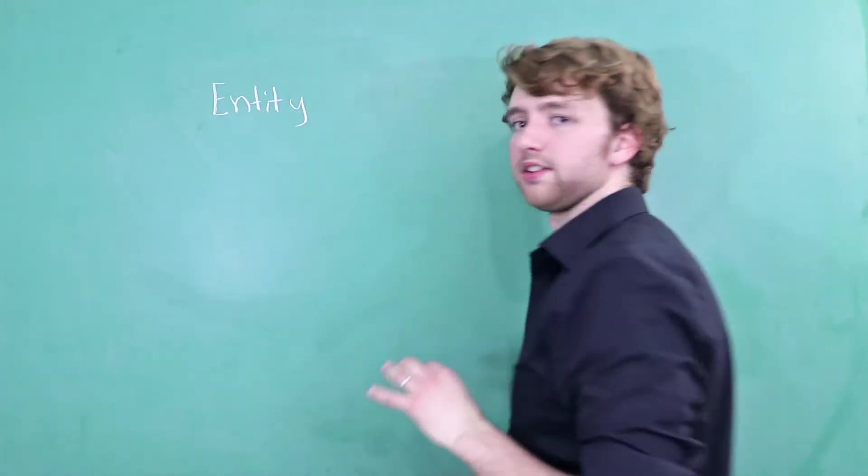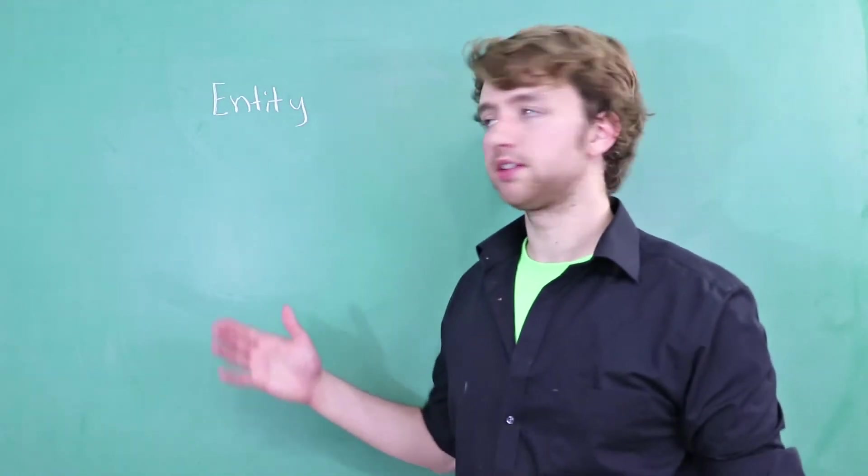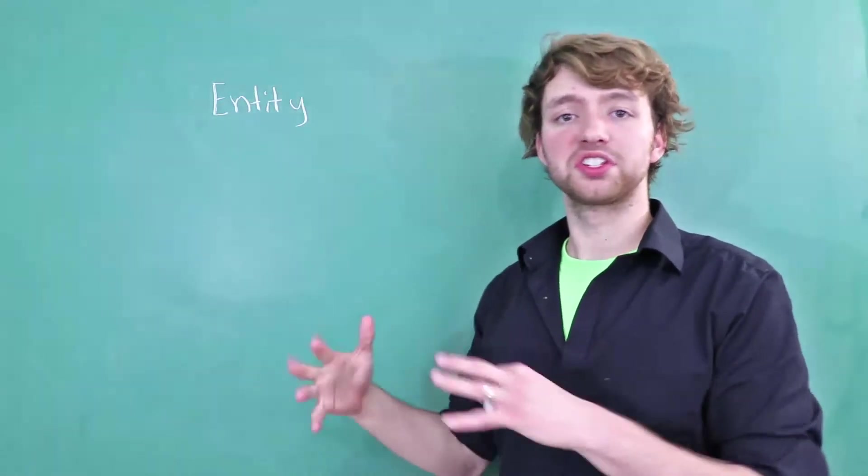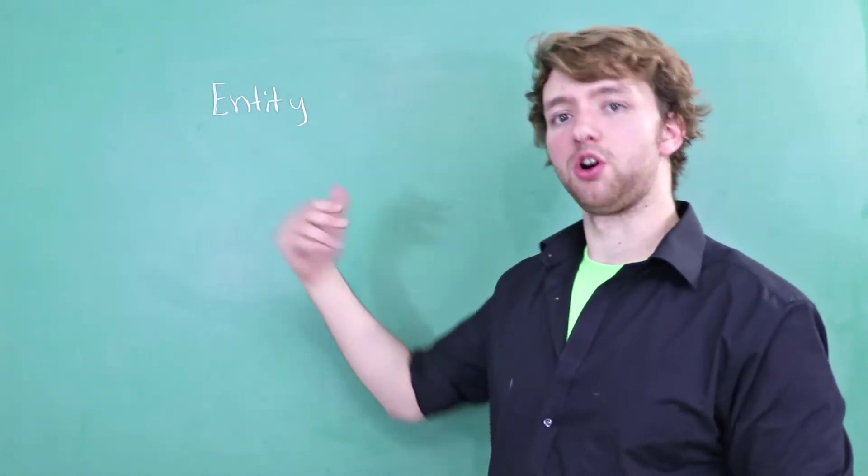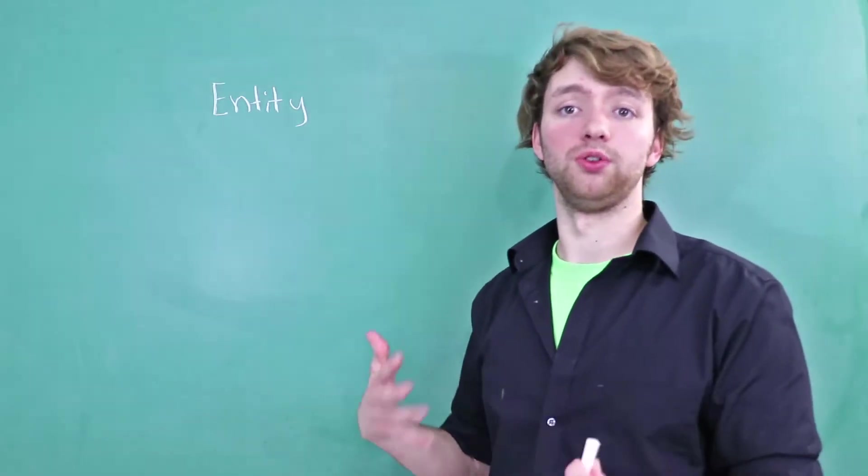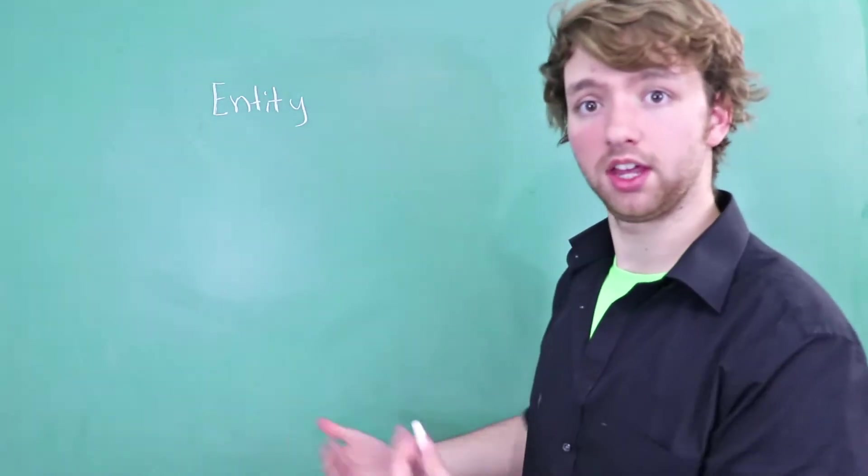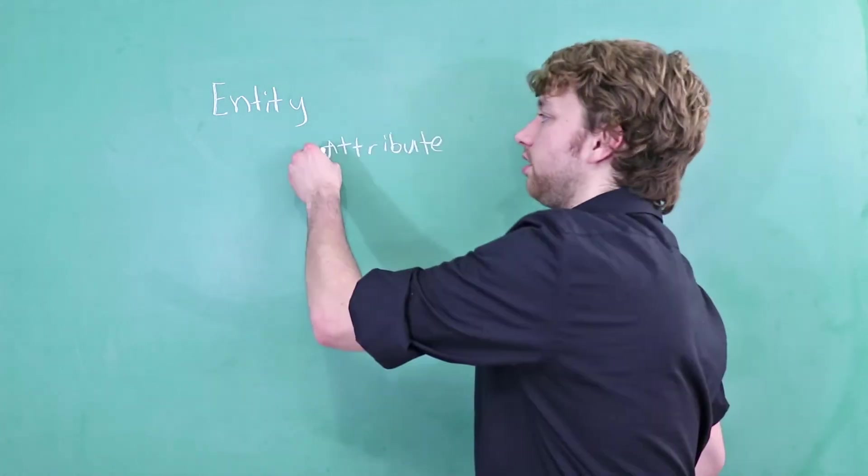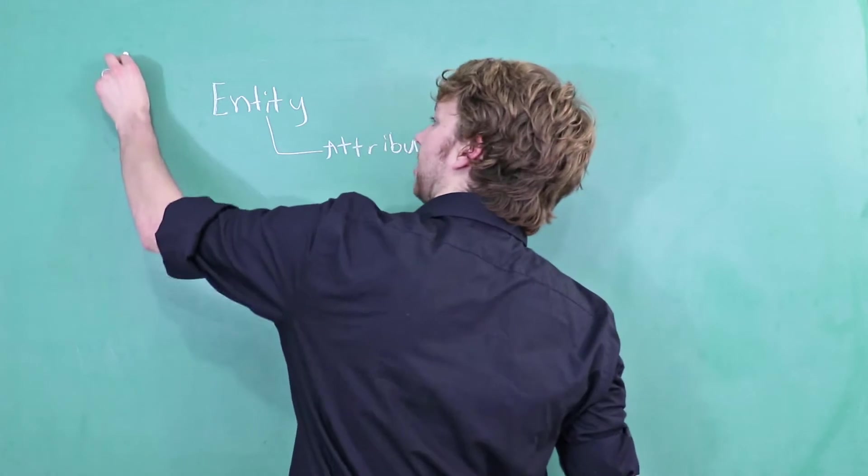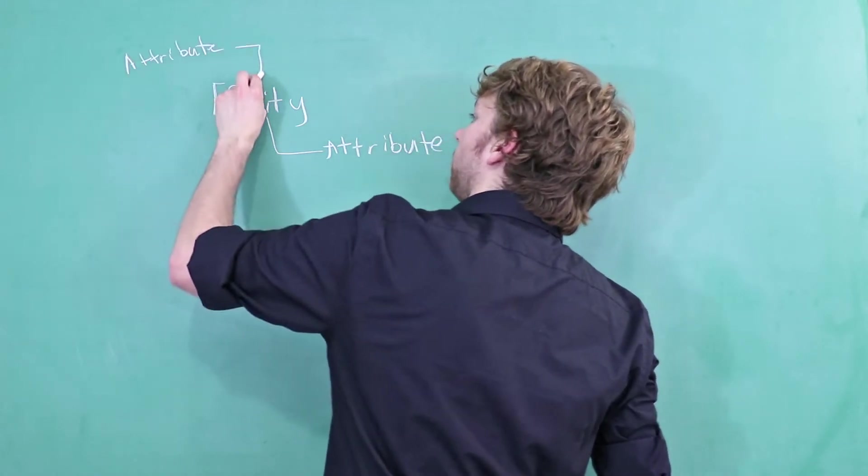One word that is essential to know when it comes to databases is entity. An entity is just a thing. When we store something in a database it's called an entity, but the things we store about that thing—like the attributes of that thing—those are called attributes. The attribute describes the entity, and in fact we can have multiple attributes describing one entity.